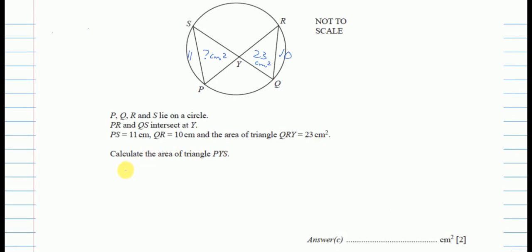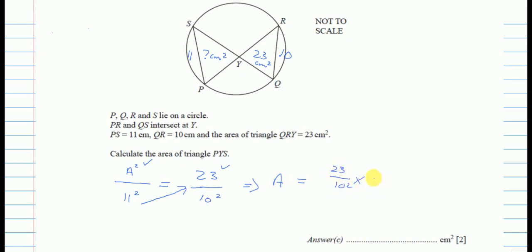Using algebra to solve: the unknown area equals 23 divided by 10 squared, times 11 squared, which equals 23 times 121 over 100. This gives approximately 27.83, so to three significant figures the area is 27.8 cm².